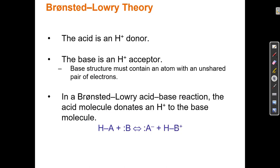That was the Arrhenius definition of acid-base. The next, more evolved definition is called the Bronsted-Lowry definition. Acids pretty much stay the same — Arrhenius said acid is H+, and Bronsted-Lowry also said acid is H+. But they changed the definition of base: Arrhenius said base is OH−, while Bronsted-Lowry said the base is an H+ acceptor.